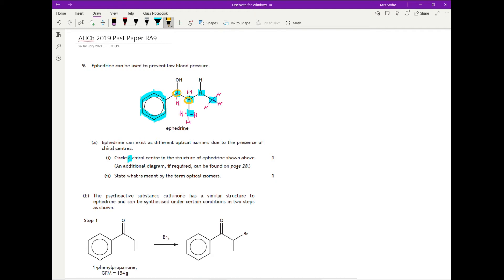State what's meant by the term optical isomer. It's pretty much definition stuff here. You're going to have to say for a start that they are mirror images. It's important. And you're going to have to say that they are non-superimposable. You can't stick them on top of one another basically and they cancel out. That's what we're looking for here.